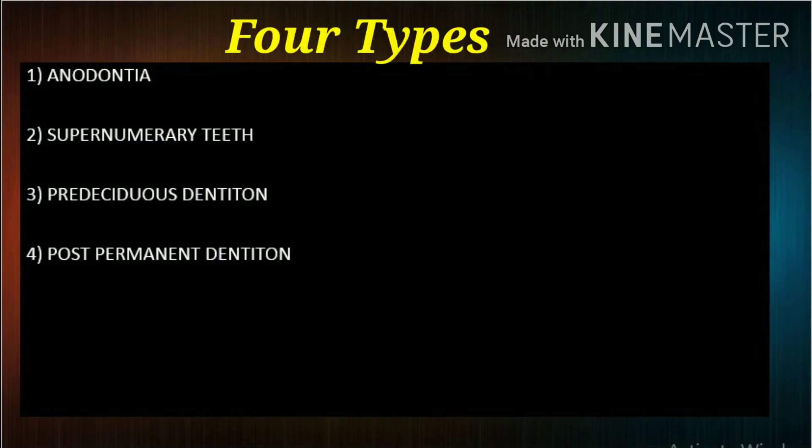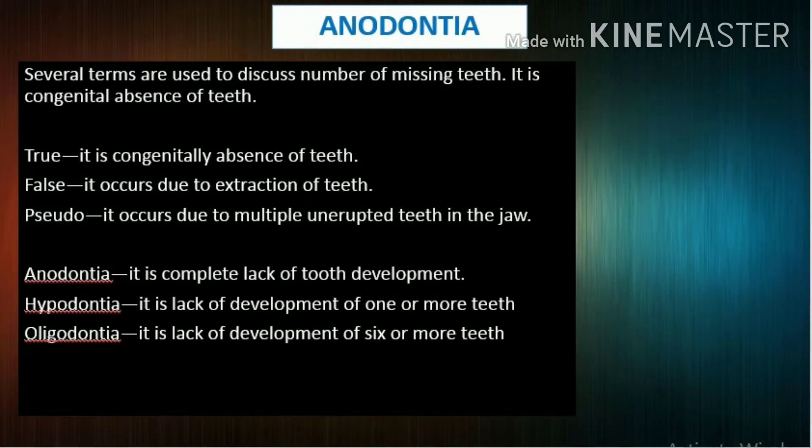There are four types of developmental disturbances in number of teeth: anodontia, supernumerary teeth, predeciduous dentition, and post-permanent dentition.